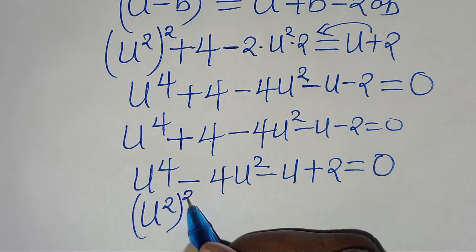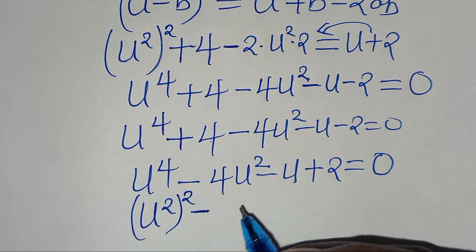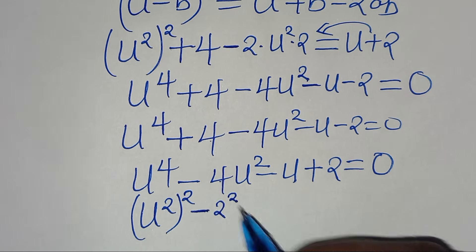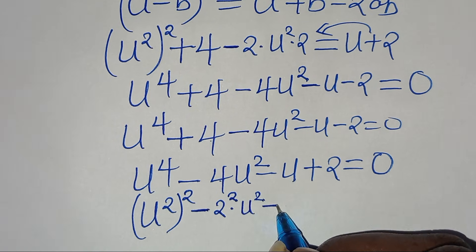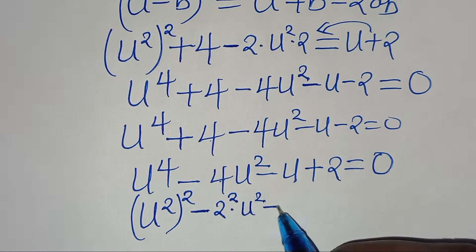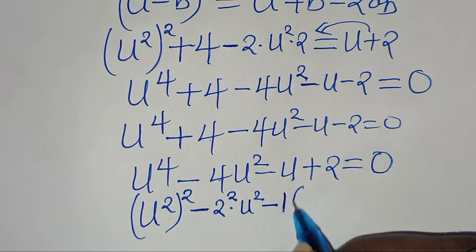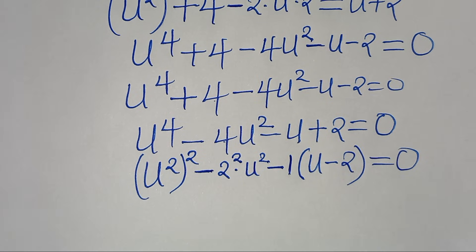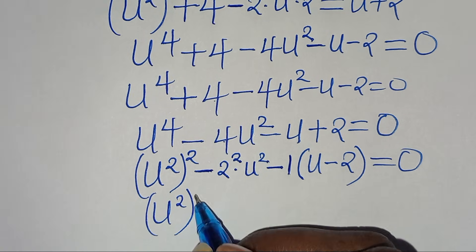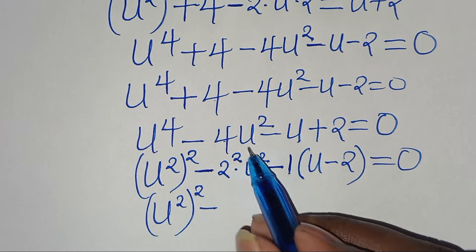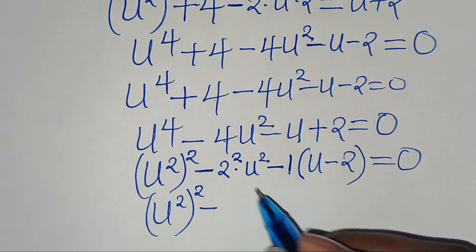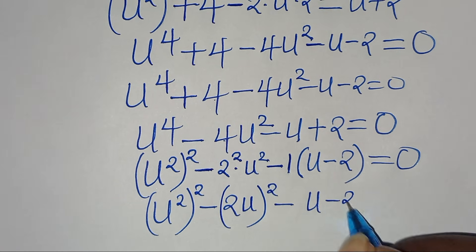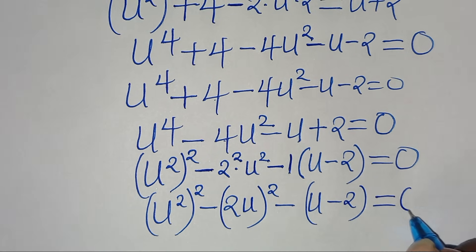Now we can express u to the power of 4 as (u squared) to the power of 2, and subtract 4u squared as (2 squared)(u squared). Then u plus 2 can be expressed with 1 factored out, so we have minus (u minus 2), this is equal to 0. So here we have (u squared)² minus 2u squared, written as (2u)² — then subtract (u minus 2), this is equal to 0.